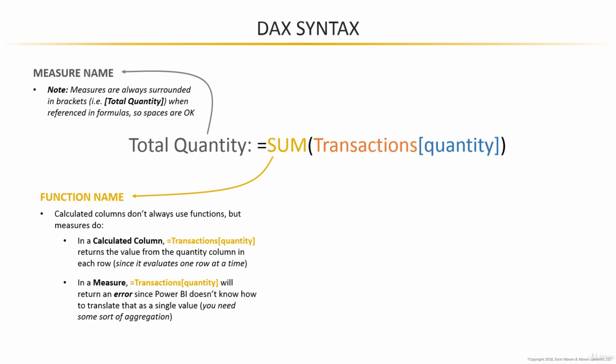That's okay because calculated columns evaluate row by row, so you could create calculations like discount price — taking the value from another column like retail price and applying some operation against it. On the other hand, you can't do that with measures. If you tried to define a measure with a naked column reference, like transactions quantity, Power BI will return an error since it doesn't know how to translate that into a single value. You need some sort of aggregation.